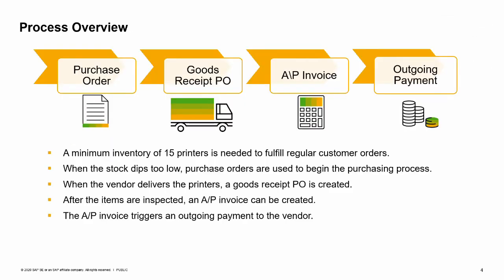Let us look at the process steps in our business example with a concrete example. A minimum inventory of 15 printers is needed to fulfill regular customer orders quickly. When the stock dips too low, purchase orders are used to begin the purchasing process. When the vendor delivers the printers, a goods receipt PO is created. After the items are inspected, an AP invoice can be created. The AP invoice triggers an outgoing payment to the vendor.